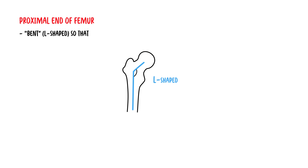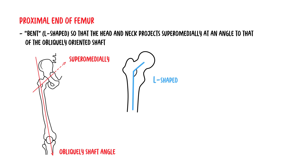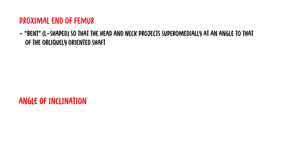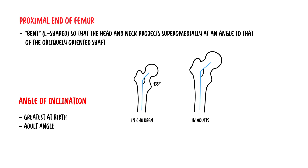The proximal femur is bent in an L-shape so that the long axis of the head and neck projects superomedially at an angle to that of the obliquely oriented shaft. This obtuse angle of inclination is greatest at birth and gradually diminishes until adulthood, reaching an average of about 126 degrees.